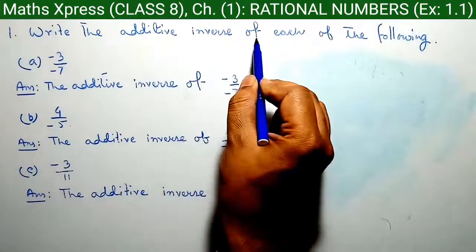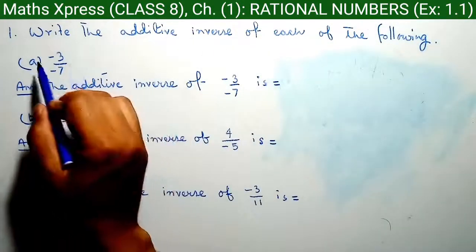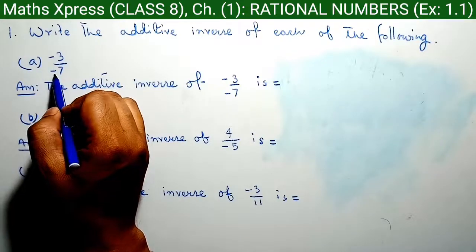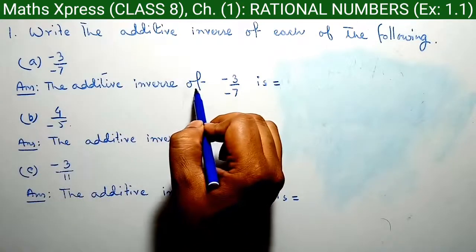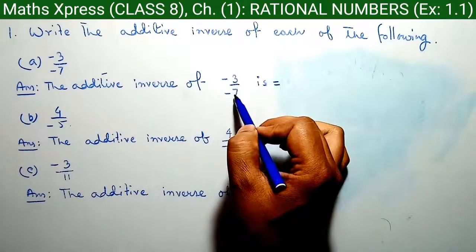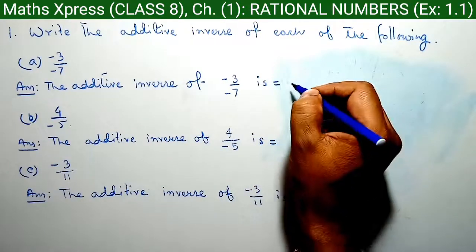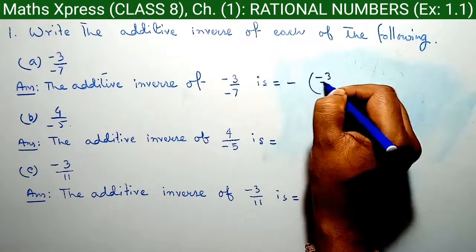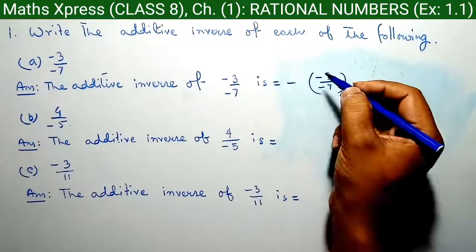Write the additive inverse of each of the following. Question A: minus 3 by minus 7. The additive inverse of minus 3 by minus 7 is minus of minus 3 by minus 7.